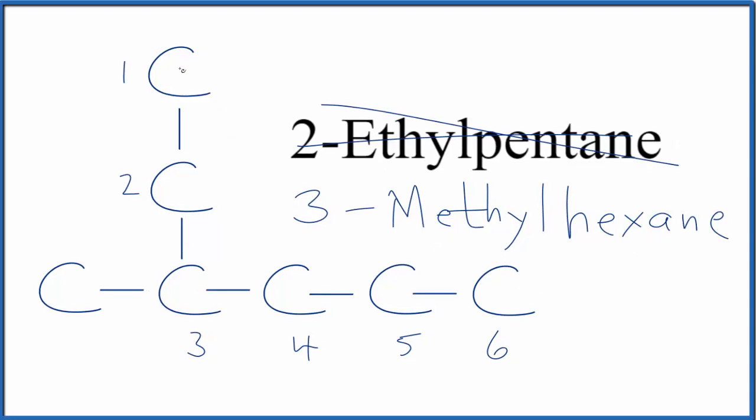And that's because the longest chain is actually 1, 2, 3, 4, 5, 6 carbons. This is Dr. B with the structure for 2-ethylpentane, which really is 3-methylhexane. Thanks for watching.